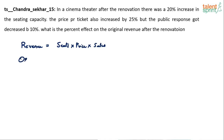What will be the original revenue? Let's assume there were 100 seats. The price of each ticket was 100 rupees, and 100 tickets were sold — 100 people came and paid 100 rupees each.